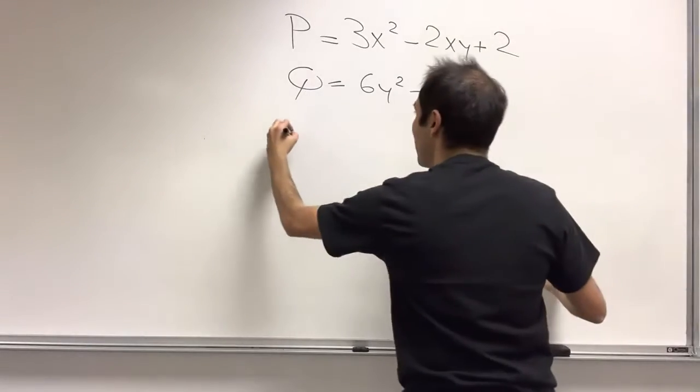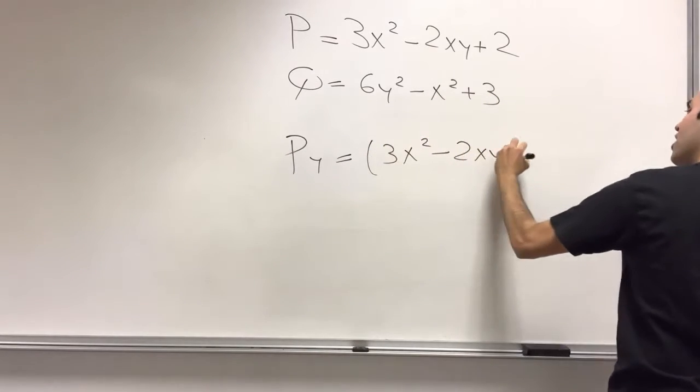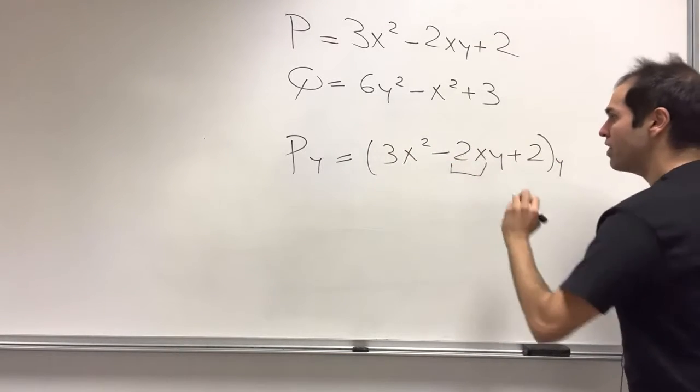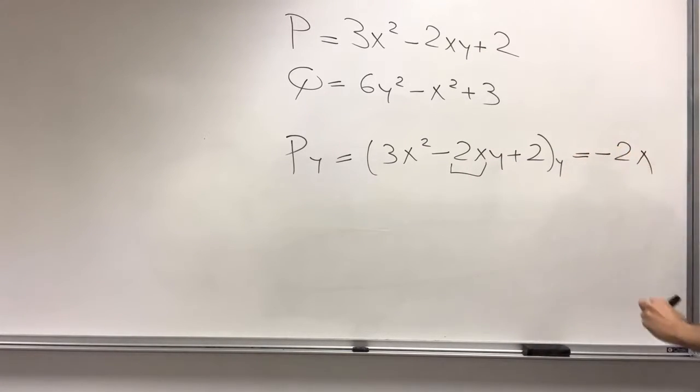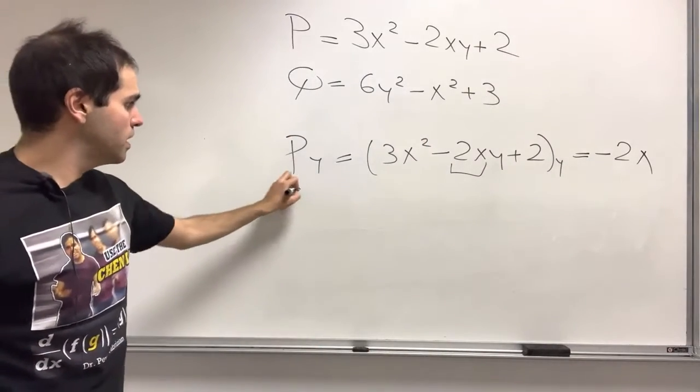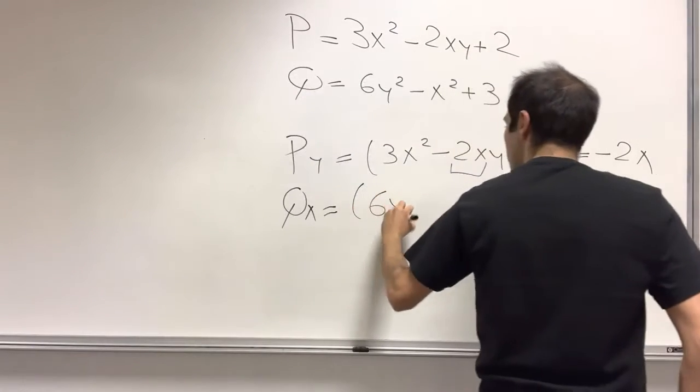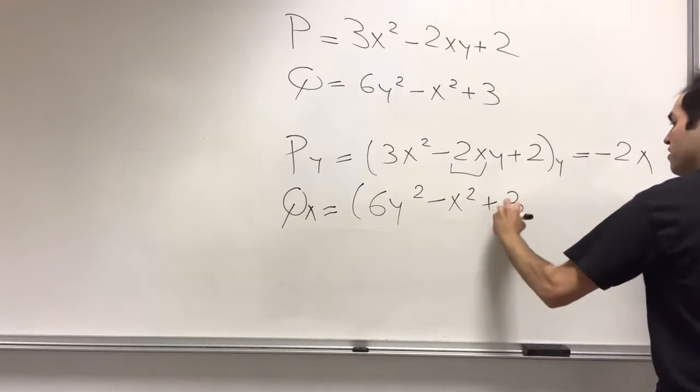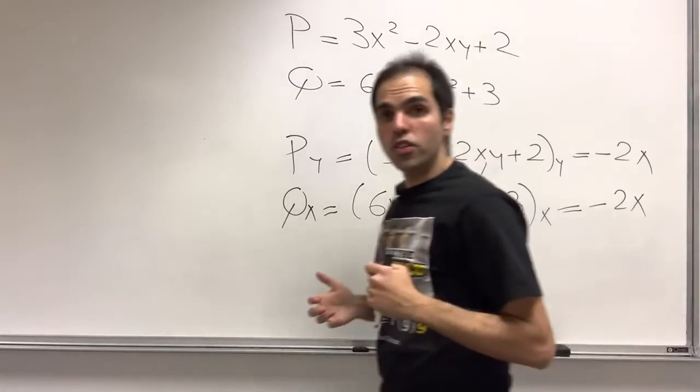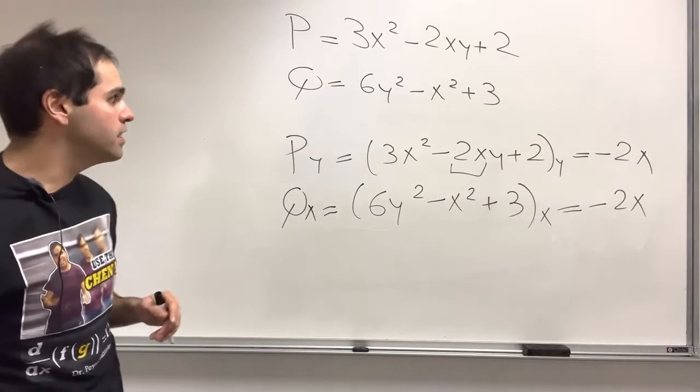So here, P_y, that is 3x squared minus 2xy plus 2. If you differentiate this with respect to y, the only thing that remains is minus 2x. And for Q, what you get here is that Q_x becomes 6y squared minus x squared plus 3 with respect to x, which also gives you minus 2x. So here, P_y is Q_x, which means we can basically get our solution by integrating.